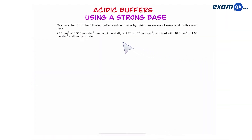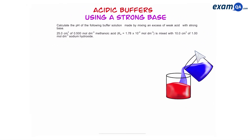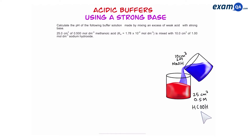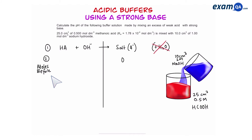Let's try a question together. Calculate the pH of a buffer made by mixing excess weak acid with strong base. We're mixing two solutions: 10 cm³ of sodium hydroxide at 1 molar concentration, and 25 cm³ of 0.5 molar methanoic acid, which is a weak acid. The first thing we're going to do is write down the equation: weak acid plus hydroxide equals salt and water. Now we want to work out the moles of each component before the reaction. Salt will be zero because we haven't made any yet.